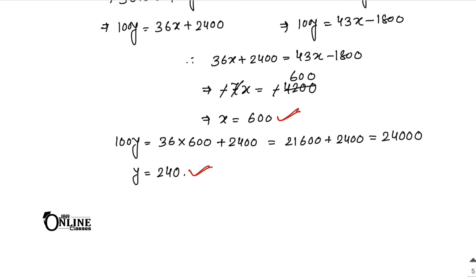Now find the percentage of pass marks. The percentage of pass marks equals y by x into 100, because y is the minimum marks and x is the maximum marks.